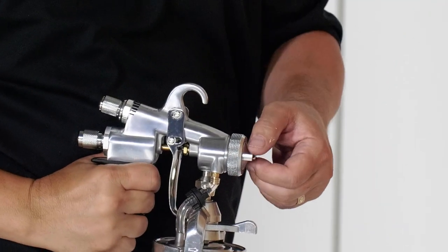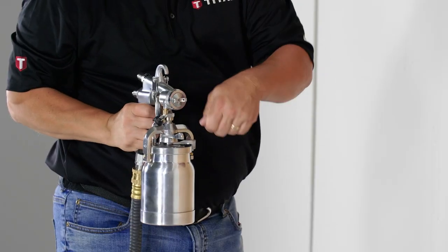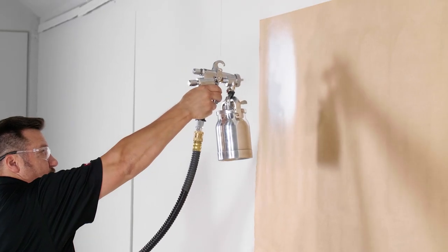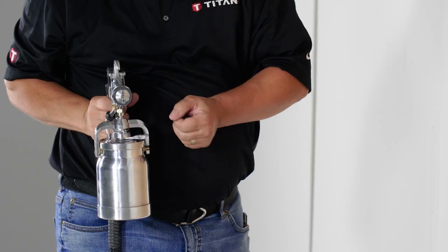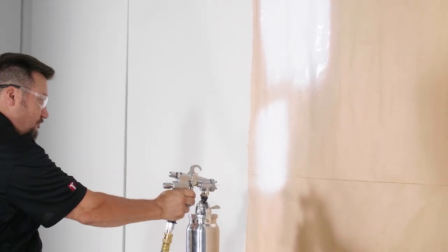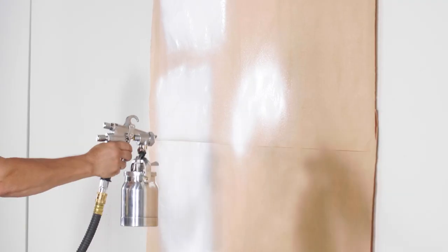Now let's talk about the directional pattern control. The Maxim II gun can quickly change patterns by adjusting the air cap position. The horizontal air cap position sprays horizontally. The vertical position sprays vertically. And the diagonal position sprays a conical pattern.